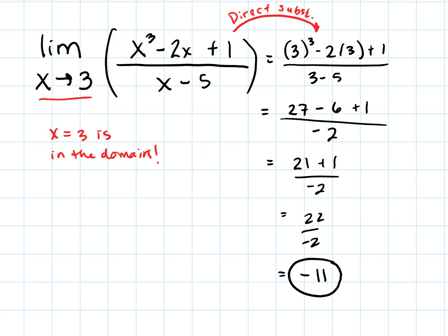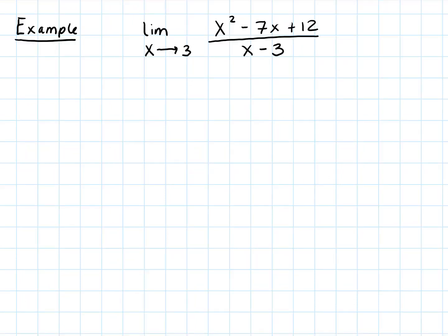For the next example, let's look at something when it's maybe not in the domain — when it's not as nice and clean. What are we going to do if we're taking a limit of a rational function where the value we're approaching does not actually live in the domain?